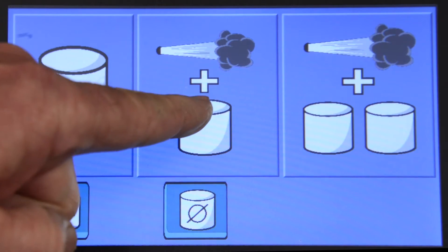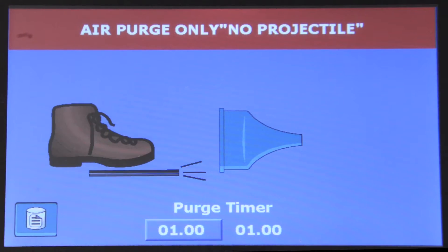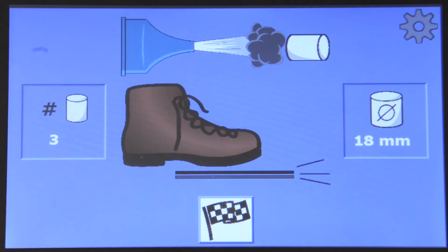The air purge plus one or two projectile mode will show a puff of air moving horizontally across the screen. Once the air purge is complete, the system will automatically load a projectile and you will be prompted to press the foot switch to launch the projectile.